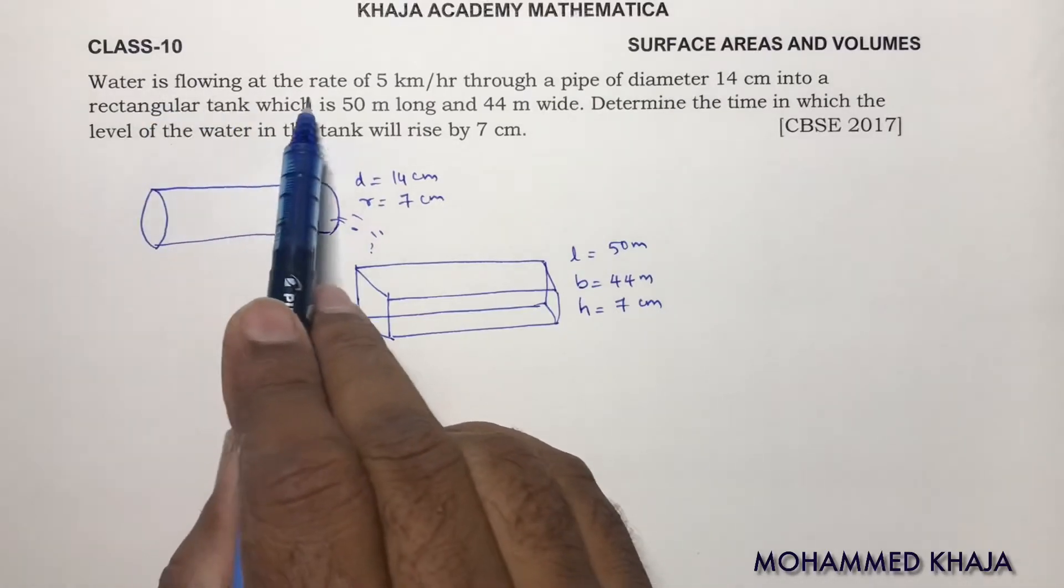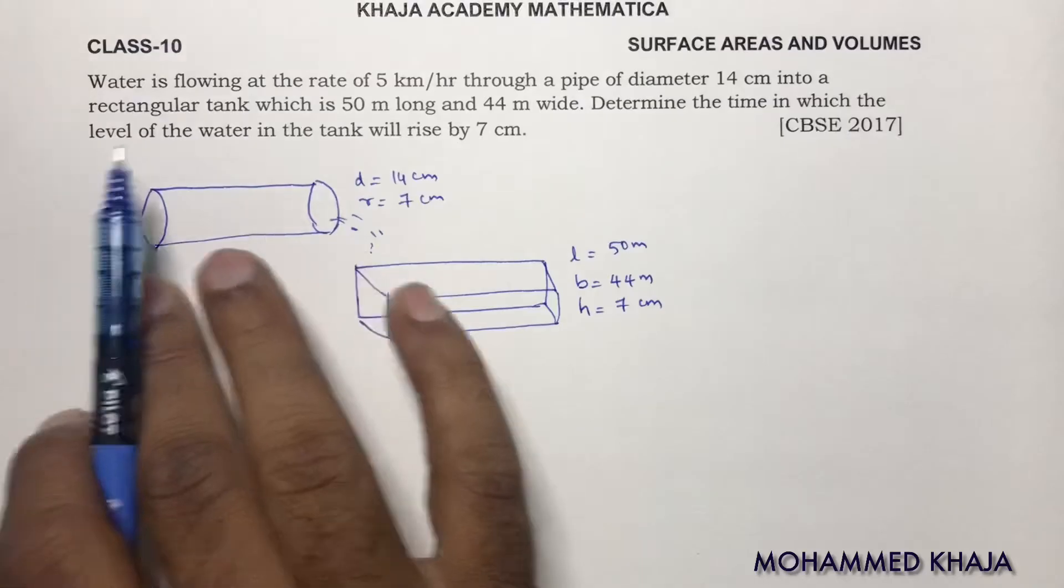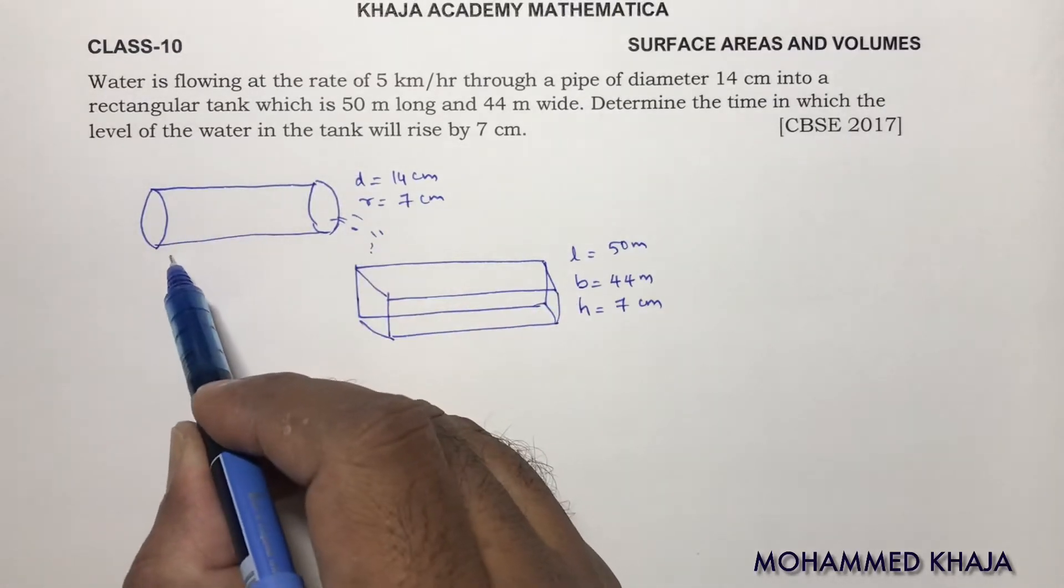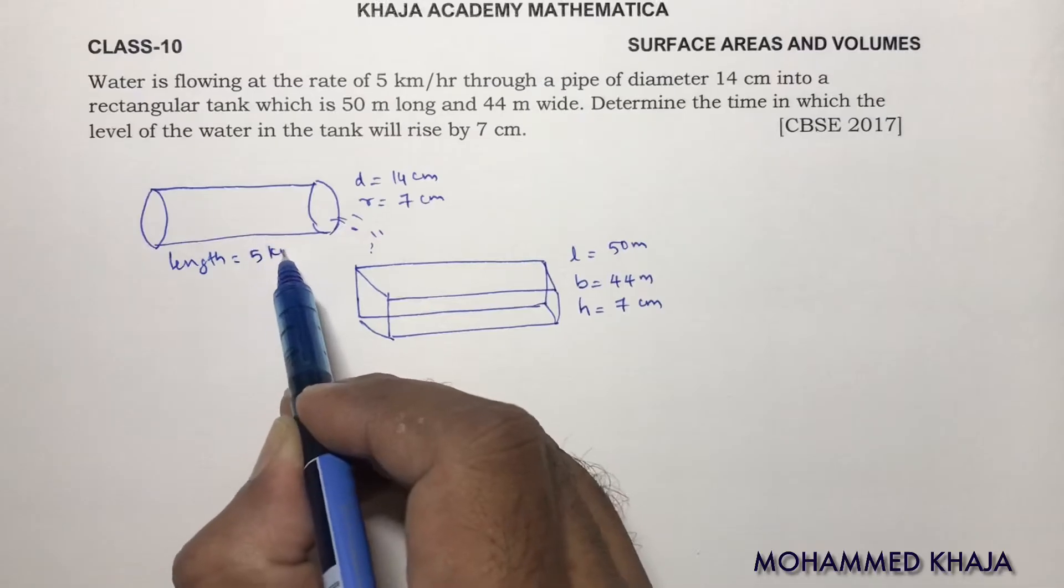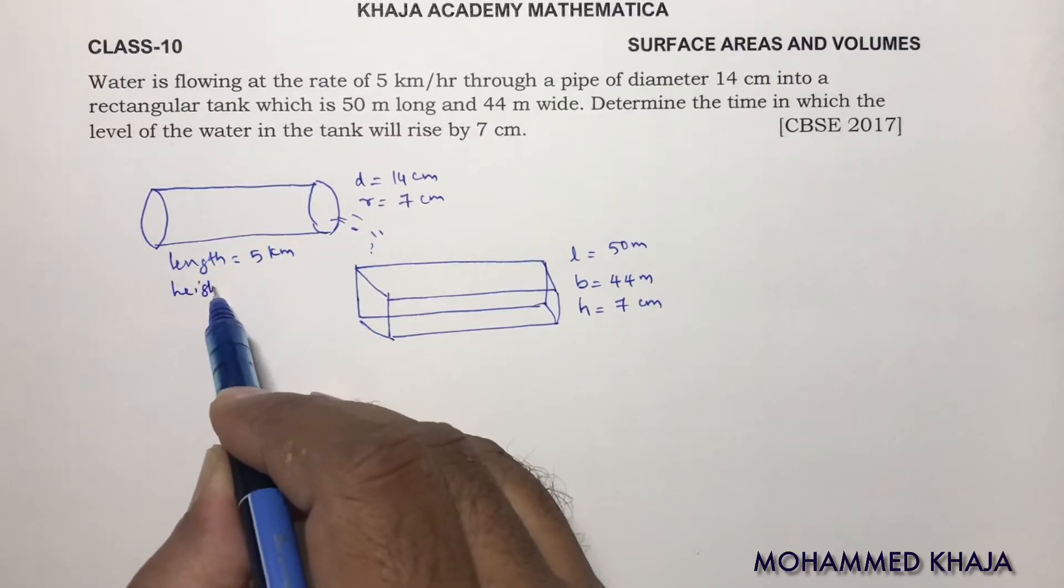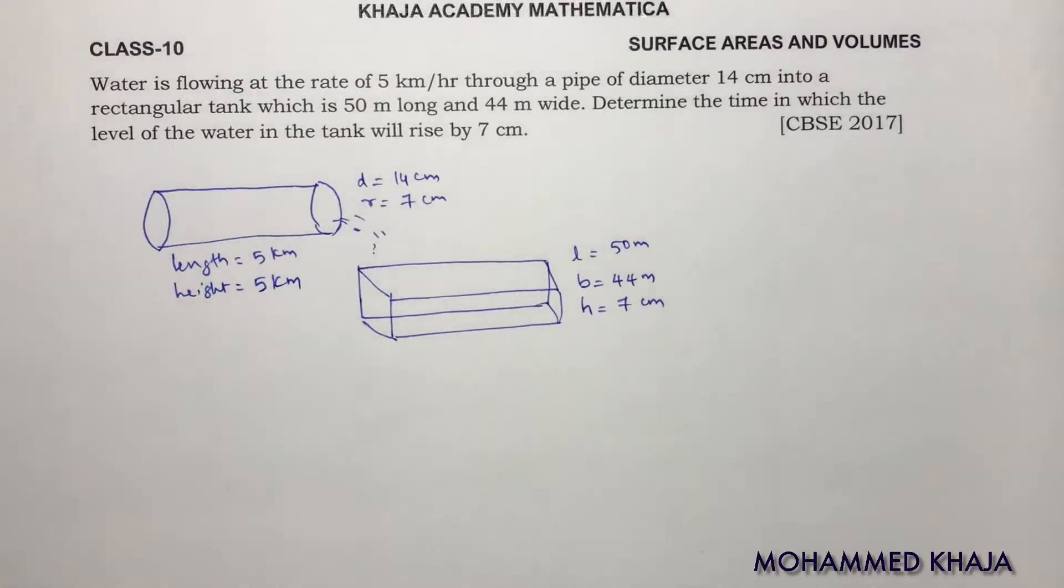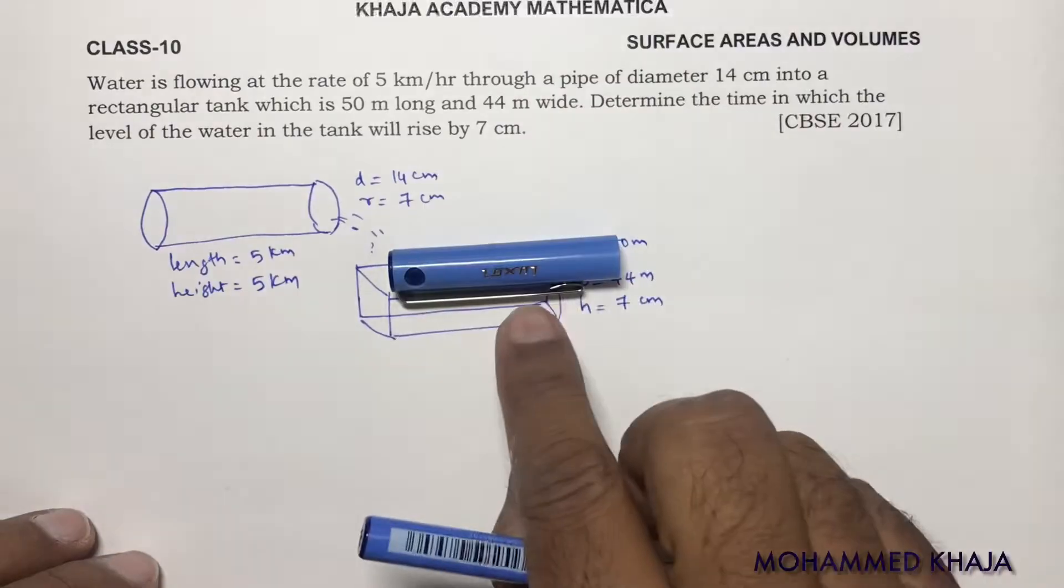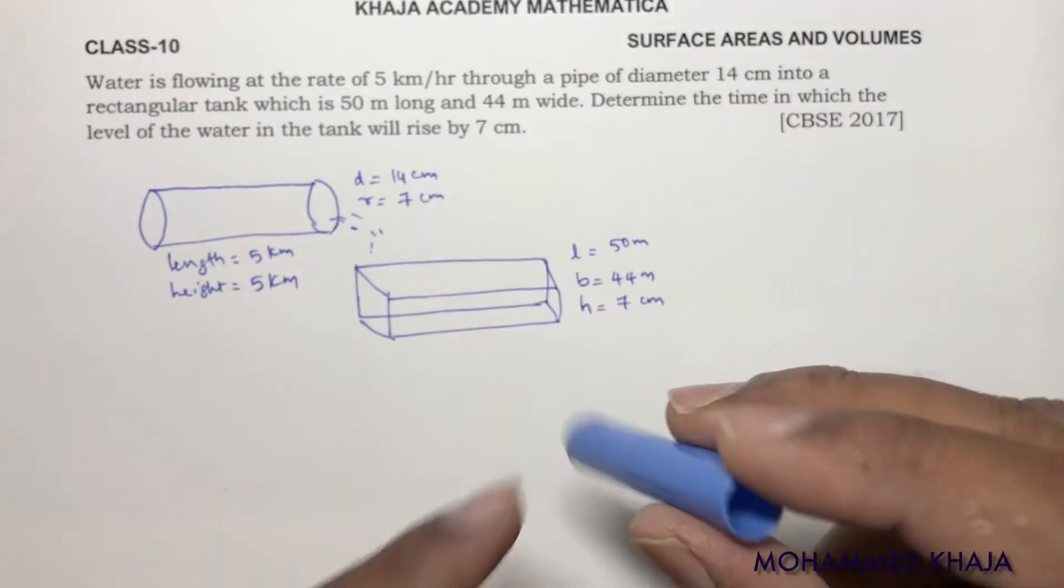Here water is flowing at a rate of 5 km through a pipe. So this 5 km is the length of the pipe. Length of the pipe only will become the height of the cylinder. Height is 5 km, because if a cylinder is 5 km, the length of the pipe, this will be the length. But if I hold it like this, this will become the height of the cylinder.